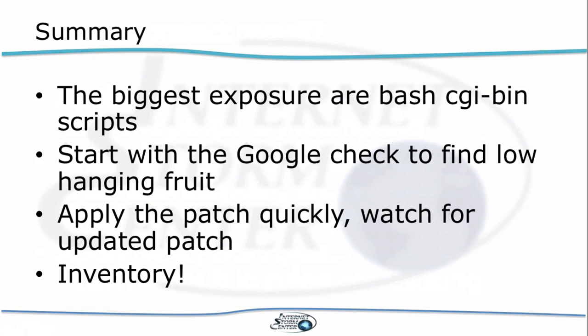In summary: a huge vulnerable population but a limited exposed population. Go after CGI-bin first. Assume systems are already compromised if they're publicly exposed and if Google can find them. Apply the patch quickly and wait for the updated patch. OS X is also vulnerable and there is no patch for OS X right now, though there is an updated patch available in source code form. I would wait for the official package from your Linux distribution. And as I always say — inventory. It's really important in these cases that you have a good inventory so you know which systems to patch first, and in this case it's CGI-bin running Bash scripts.